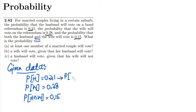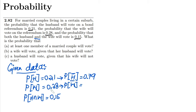From this given data we can also derive: the probability that the husband will NOT vote is represented by H complement, which is 1 minus 0.21 = 0.79. Similarly, the probability that the wife will NOT vote is 1 minus P(W), which is 1 minus 0.28 = 0.72. These are the two additional probabilities reduced from the given data.